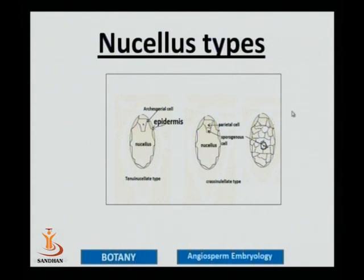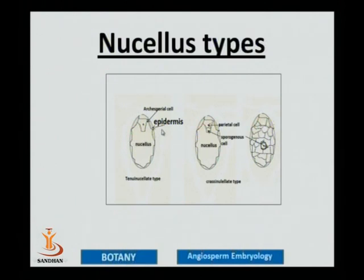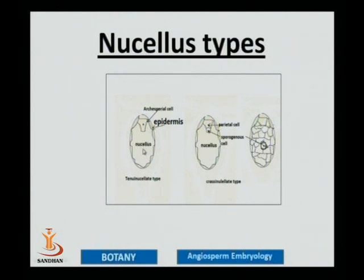We have seen the detailed structure of the integuments. Simultaneously, you also have to study the nucellus types in different flowering plants. The nucellus is the main body of the ovule and is the site where the future megaspore mother cell is going to develop. A very young nucellus has only a single layer known as the nucellular epidermis, and cells filling the cavity of the nucellus are known as nucellular tissue.